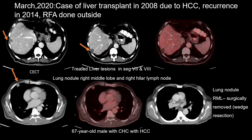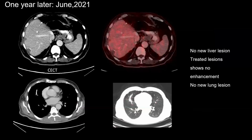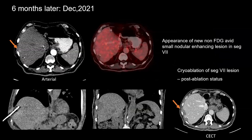Case scenario two is a post-transplant recurrence: a 67-year-old male with chronic hepatitis C and HCC who had a liver transplant in 2008. He had a recurrence in 2014 for which RFA was done outside. On follow-up in March 2020, the treated lesion looked good but there was a lung nodule in the right middle lobe, which was taken up for surgical resection. Subsequent follow-up showed no new liver lesion and no new lung lesion. Six months later, a hyperenhancing area appeared in the right lobe adjacent to the treated area, close to the liver capsule and parietal wall. This was treated with prior ablation, and the image shows a good ablated zone after the therapy.